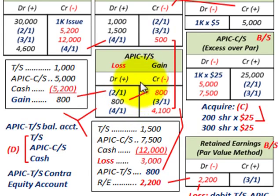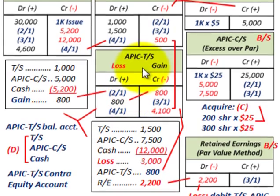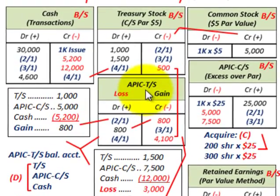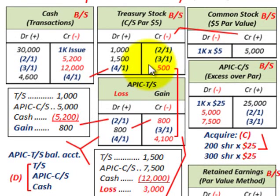That takes care of comparing the cost method with the par value method for acquiring and reissuing treasury stock.